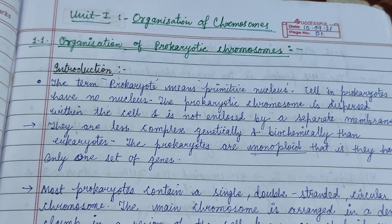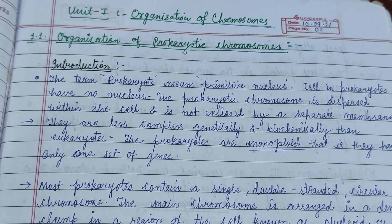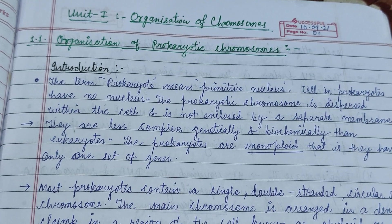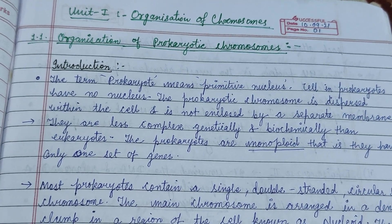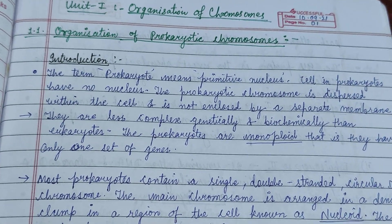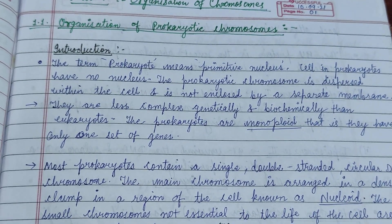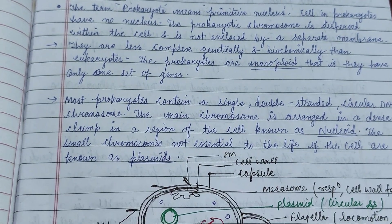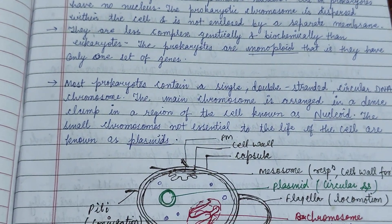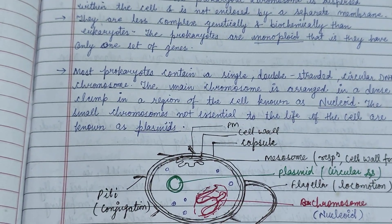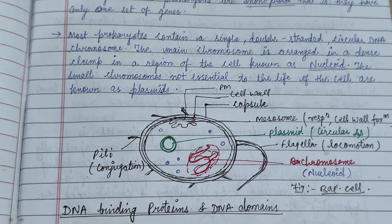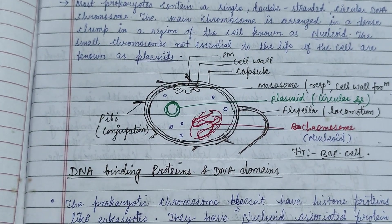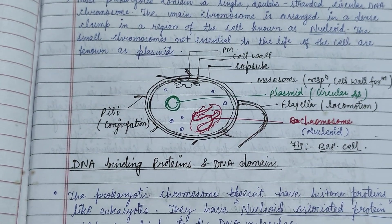Hello everyone, this is a video regarding Core Course 3, Unit 1, and we are discussing point 1.1: organization of the prokaryotic chromosome. Prokaryotic means primitive nucleus. Prokaryotes are monoploid — they have only one set of genes — and most prokaryotes contain a single double-stranded circular DNA chromosome.